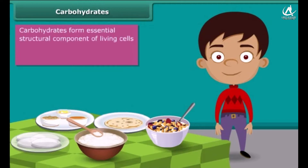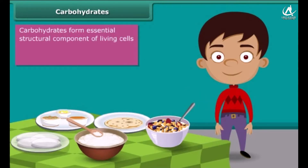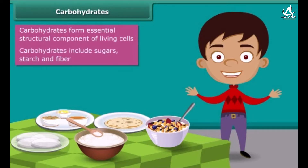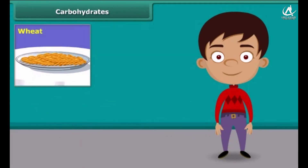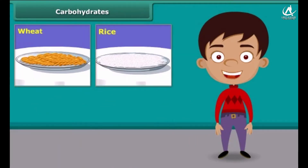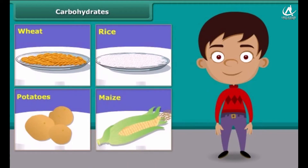Carbohydrates form an essential structural component of living cells. They are the main source of energy for animals. Carbohydrates include sugars, starch, fiber, etc. They are mainly found in wheat, rice, potatoes, corn and maize.